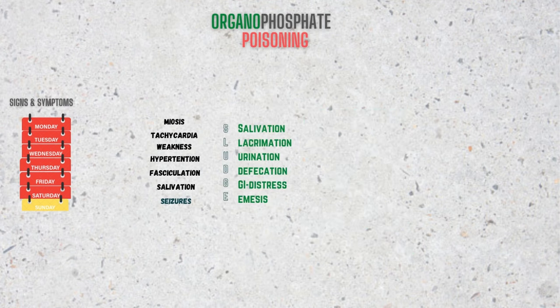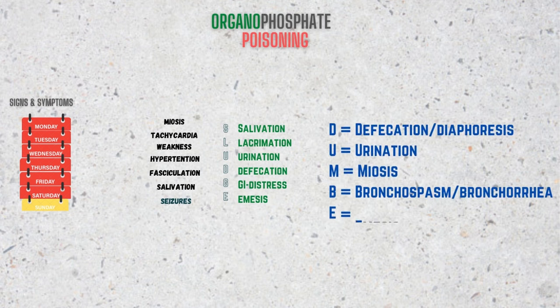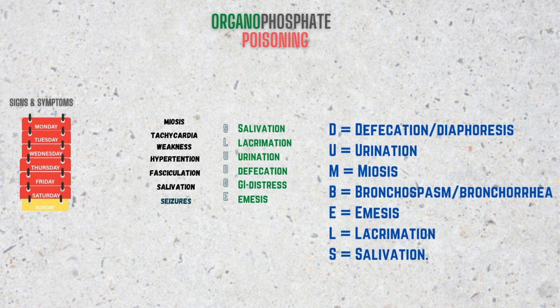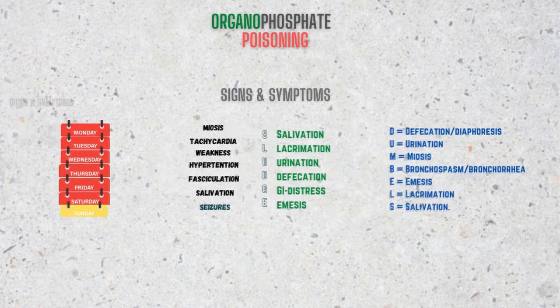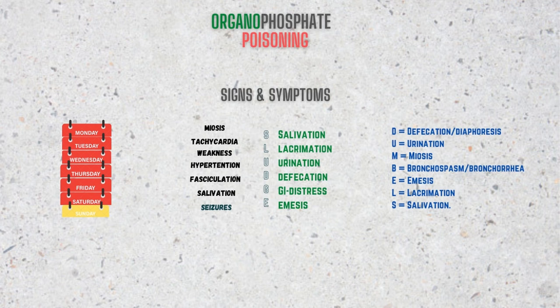The more common mnemonic that captures the muscarinic effects of organophosphate poisoning is DUMBBELLS: D for defecation or diaphoresis, U for urination, M for miosis, B for bronchospasm or bronchorrhea, E for emesis, L for lacrimation, and S for salivation. If you remember one of the above mnemonics, it will be really helpful in the diagnosis of organophosphate poisoning in the ER.